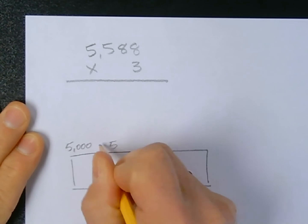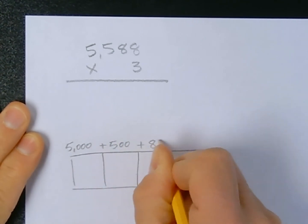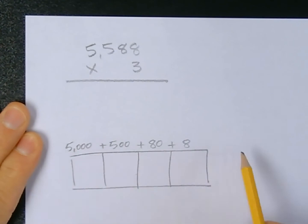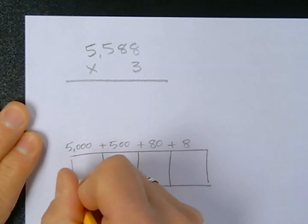Plus 500, plus 8 tens, plus 8 ones - that's what we call expanded notation right there. And I'm going to multiply all these parts by 3.